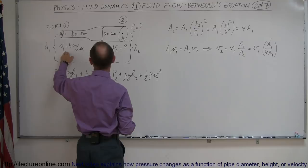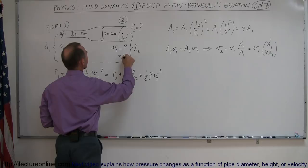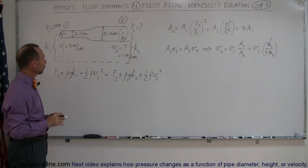So if V1 is 4 meters per second, then V2 has to be 1 quarter of that, or 1 meter per second. So now that we know that, we're now ready to tackle Bernoulli's equation.